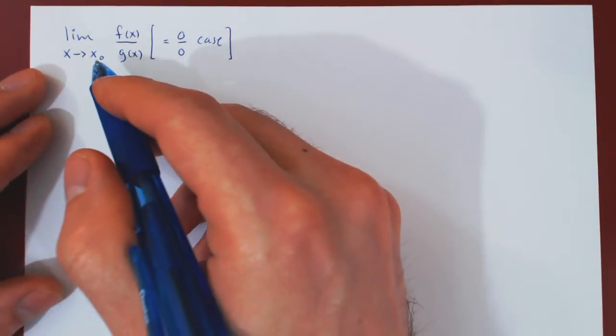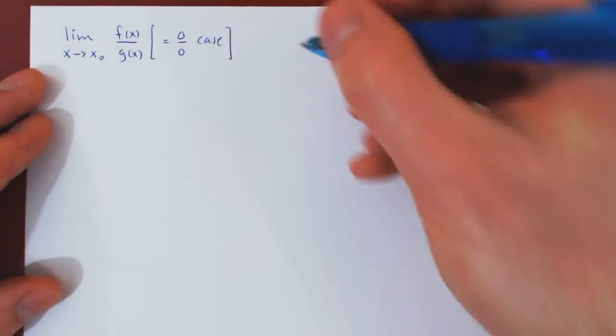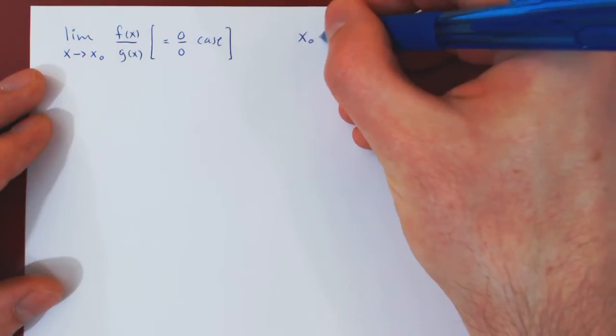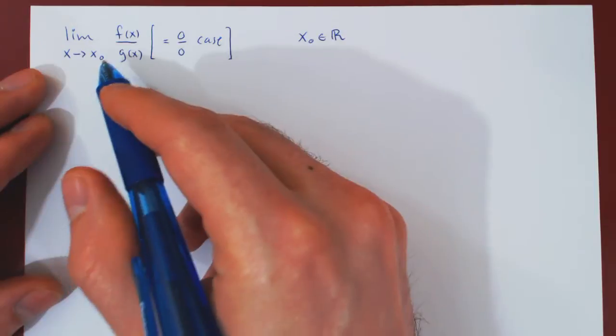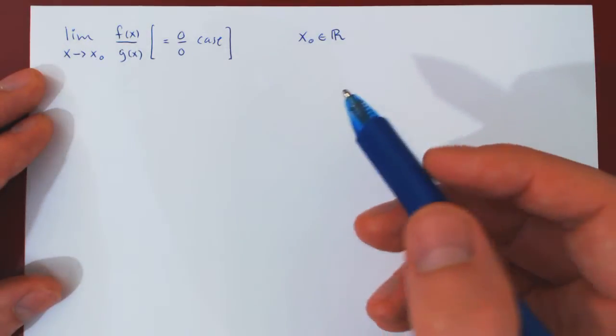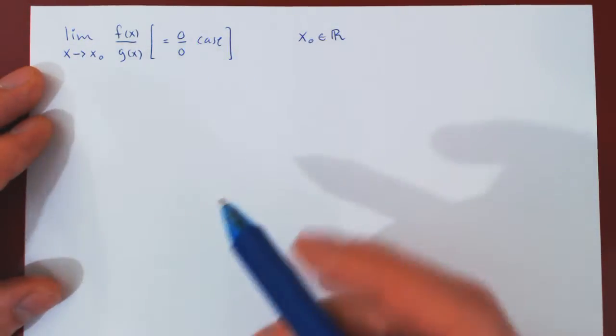We'll make one more assumption that x₀ is some real number. We know x₀ is allowed to be positive or negative infinity, but in this argument, I'll assume it's a real number.